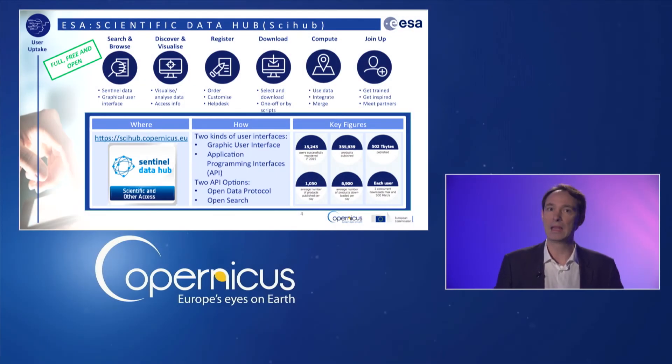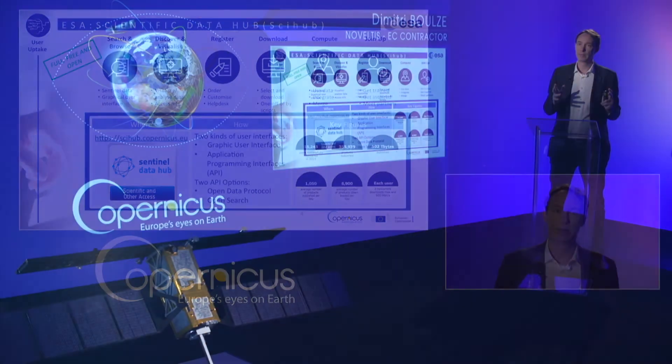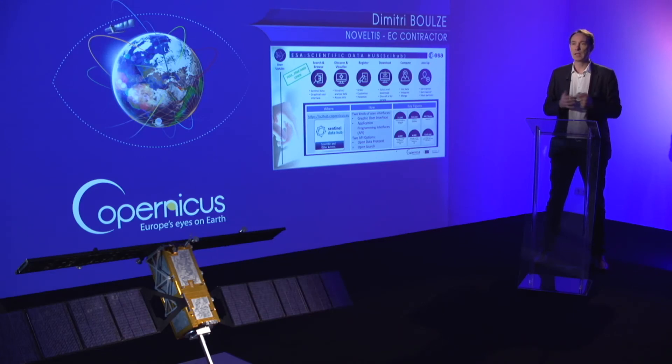In the graphical user interface of the Scientific Data Hub, you can define an area and period of interest. You can specify the Sentinel mission and any parameter related to the satellite imagery. The search results show the metadata of the image and the thumbnail. The images can be downloaded directly, though limited to two images at the same time. To automate the download, you can also use a second access mechanism, the API Hub. We are not going to describe it now, but you will find more information on this API Hub on the ESA website or on the dedicated info session.